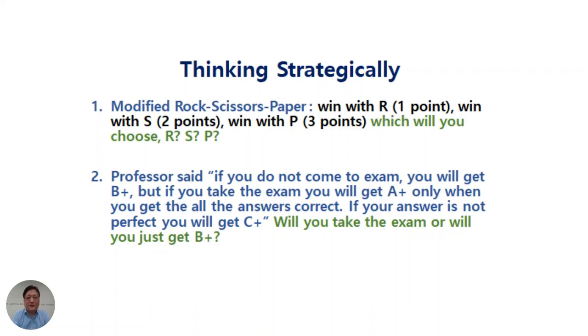So, obviously, winning with paper is best for you. And winning with rock is good enough, but not as good as winning with scissors or paper. If you play this game, which of these three choices - rock, scissors, paper - are you going to use most frequently?